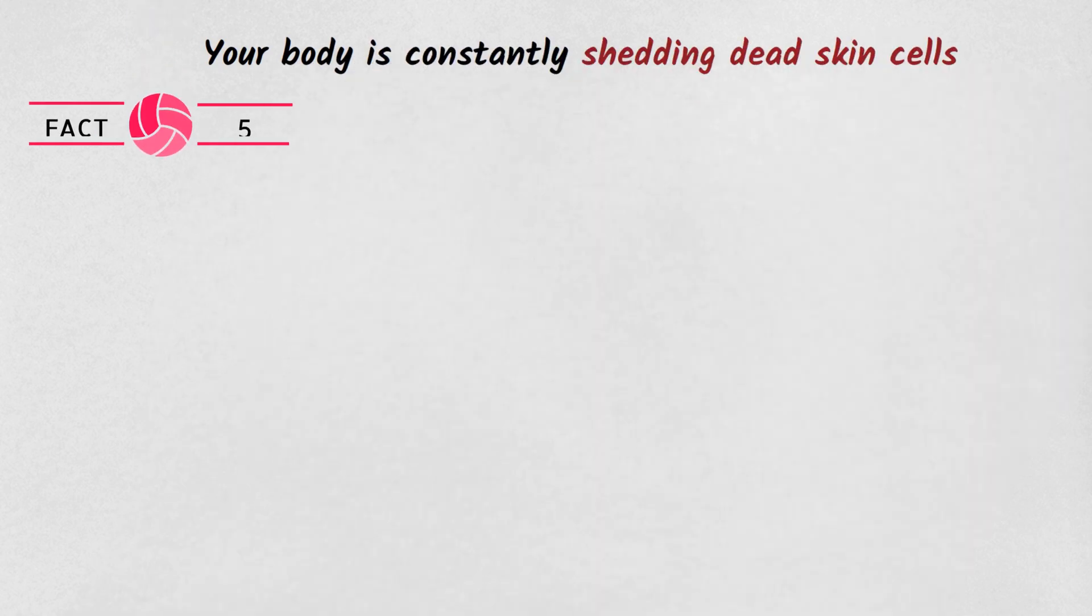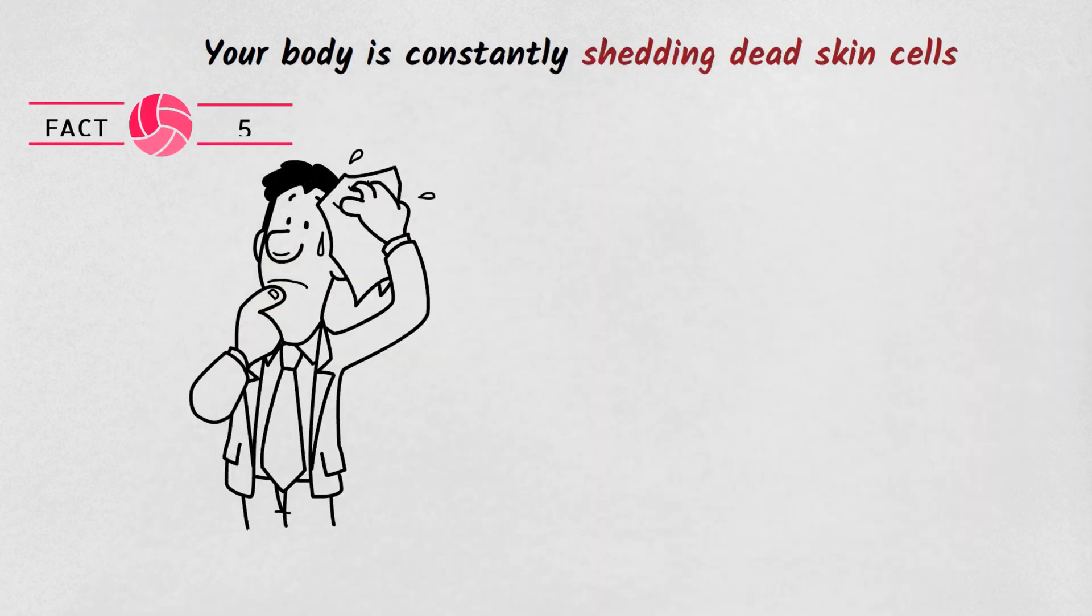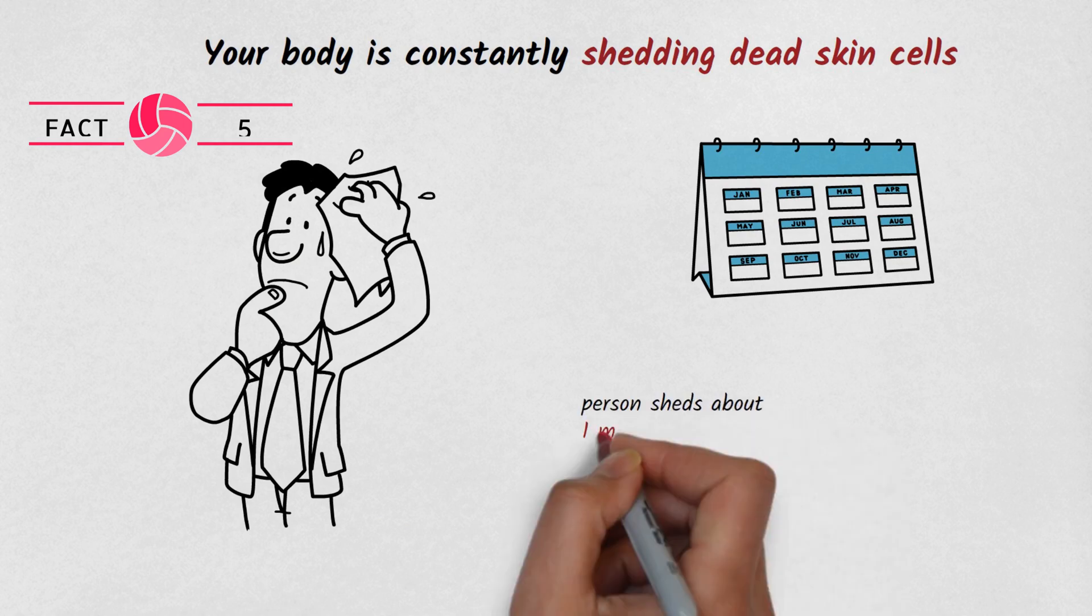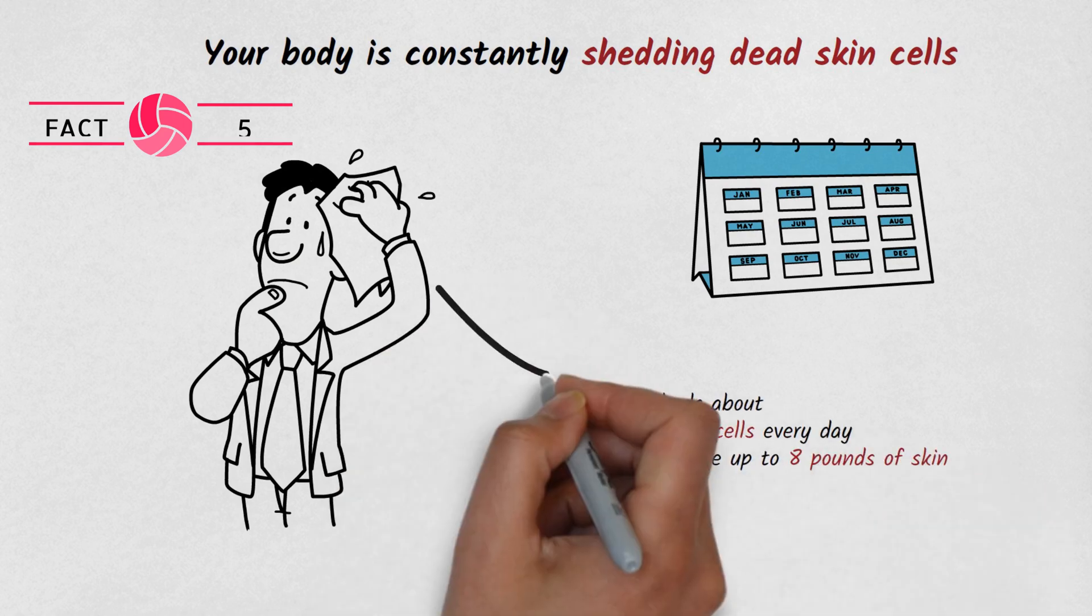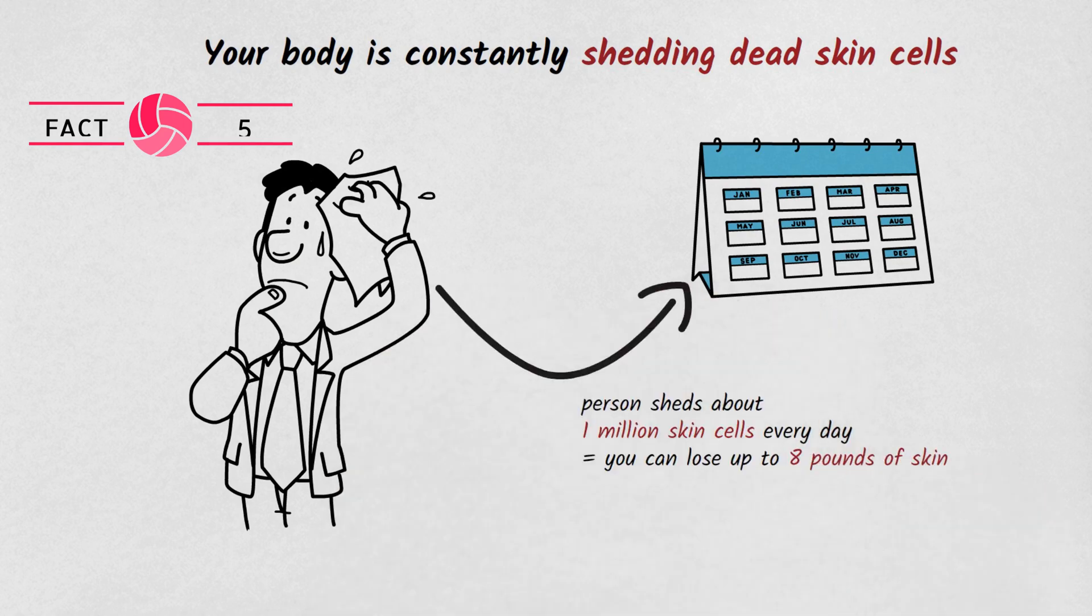Fact number 5. Your body is constantly shedding dead skin cells. The average person sheds about 1 million skin cells every day, which means that over the course of a year, you can lose up to 8 pounds of skin.